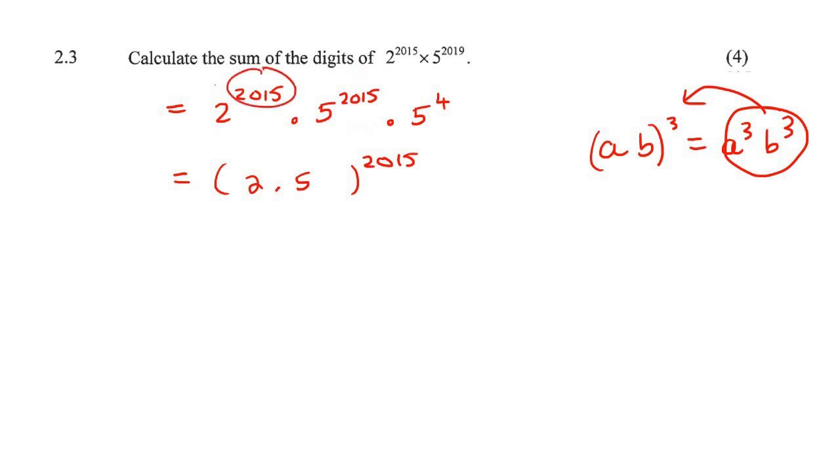See that these two are the same, just like these two are the same, so then you can just do it backwards. Okay, now that just becomes 10 to the power of 2015 and then 5 to the 4.